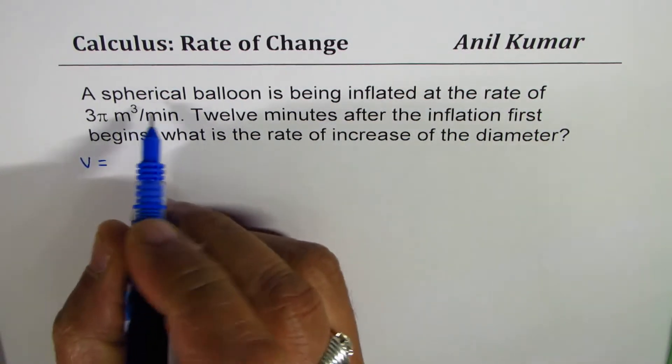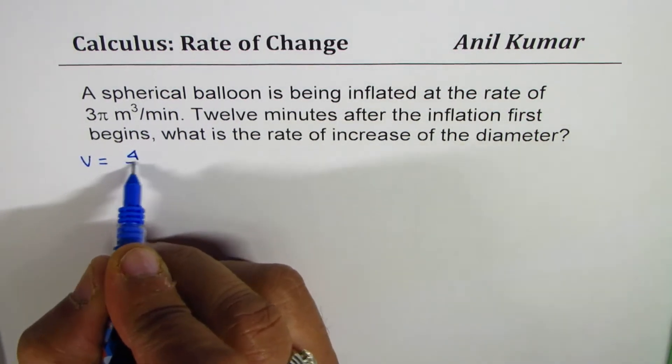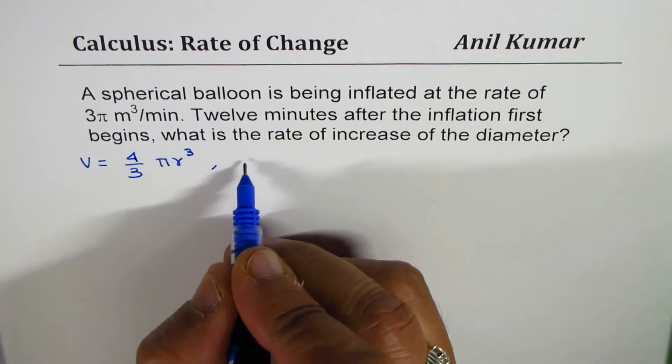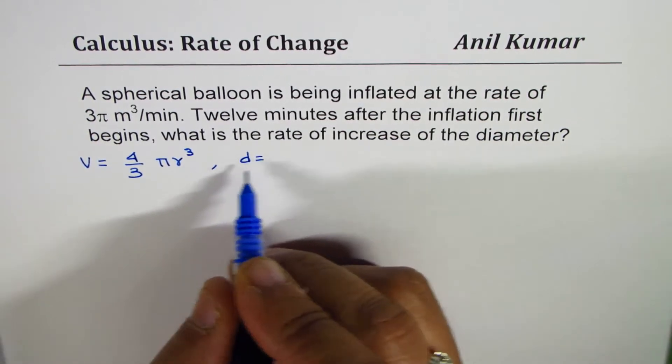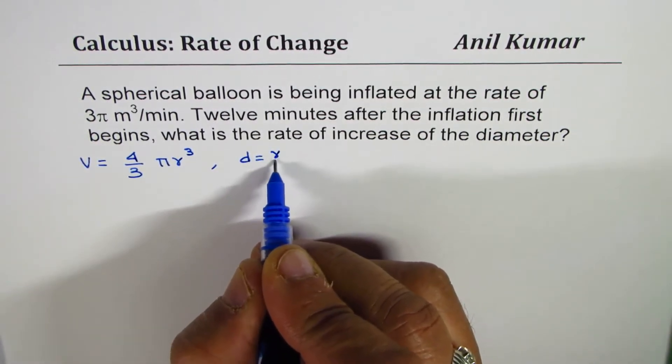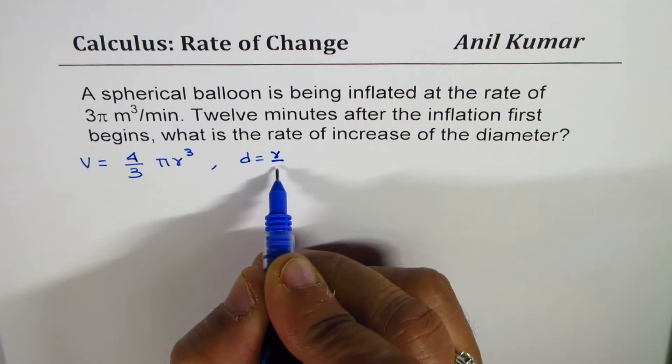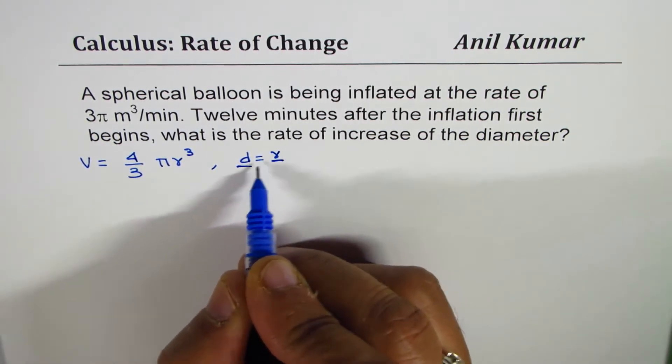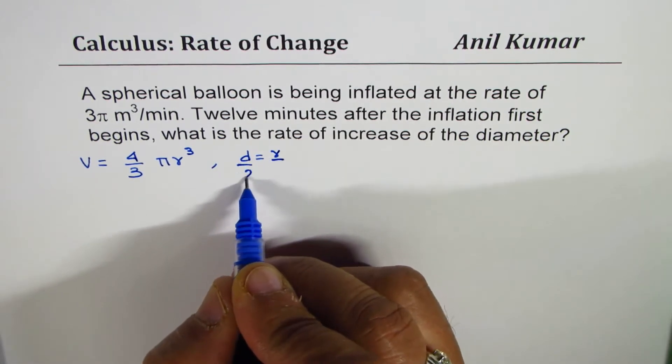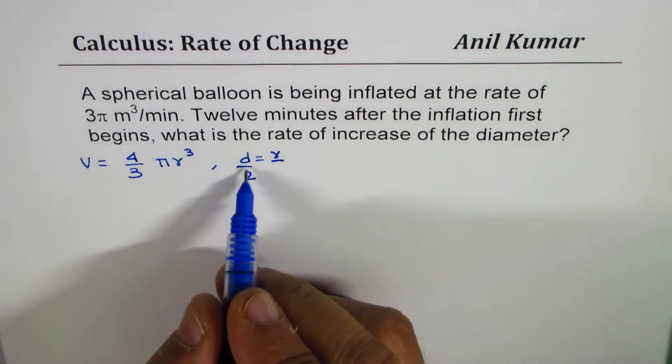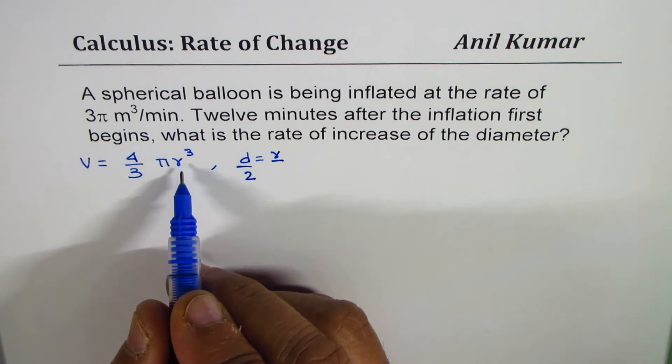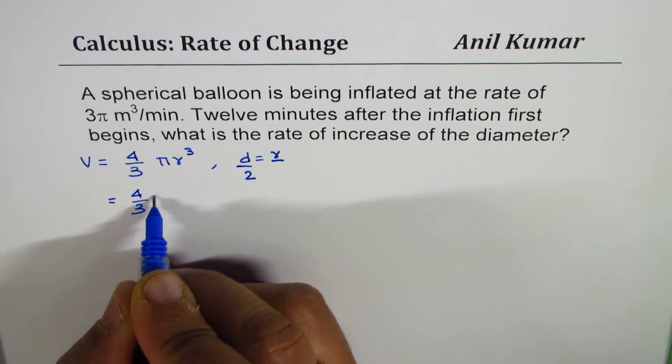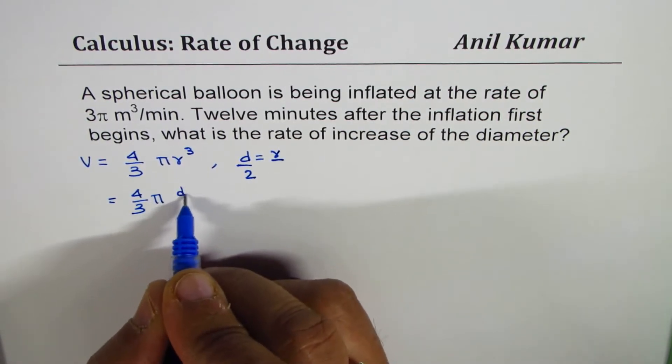Volume for a sphere is 4/3 πr³, where diameter equals 2r, or we can write r is diameter divided by 2. Substituting d/2 in the formula, we can get volume as 4/3 π(d/2)³.